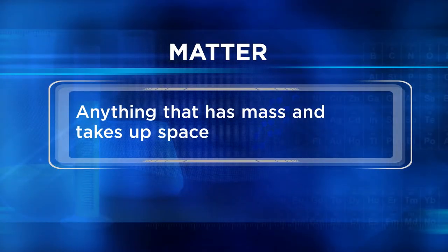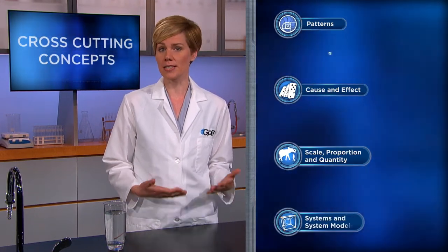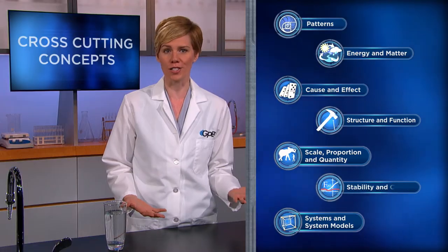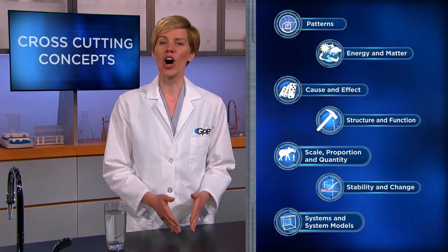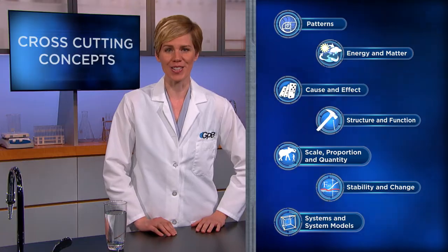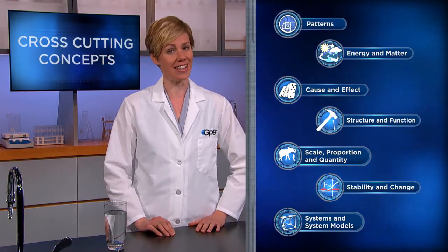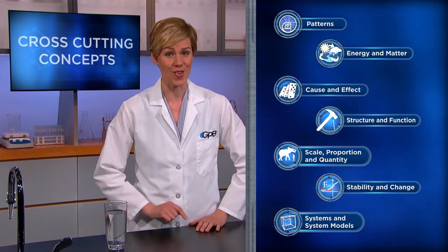Matter is anything that has mass and takes up space. In this unit, you'll learn about physical and chemical properties of matter, how these chemicals mix together and how they can be separated from each other. You'll also be given the task of designing a method to separate a mixture of materials. As we learn more about chemistry, we'll point out cross-cutting concepts — common concepts found in all parts of science and engineering — and by the end of this unit, you'll know how to recognize them on your own.